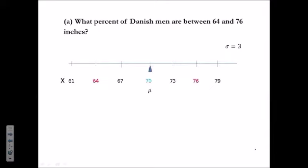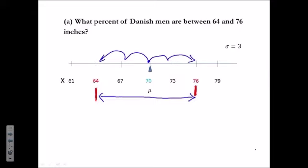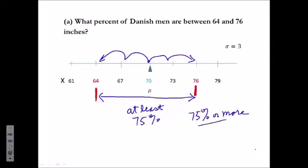Let's do part A: what percent of the Danish men are between 64 and 76 inches? 64 is right here and 76 is here. We're talking about what percent of the men would be between these two numbers in that interval. This interval is two standard deviations from the mean in either direction. According to Chebyshev's theorem, at least 75% of the Danish men have to be within that interval. At least 75% means 75% or more — it could be more, it cannot be less.